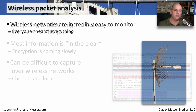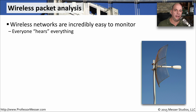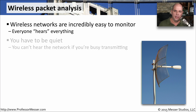To capture packets on a wireless network, you need a good antenna, and you need to be somewhere that you can hear as much of the network communication as possible. Because this is wireless, everything tends to be very geography-based, and your antenna needs to be able to pick up as much of that information as possible.